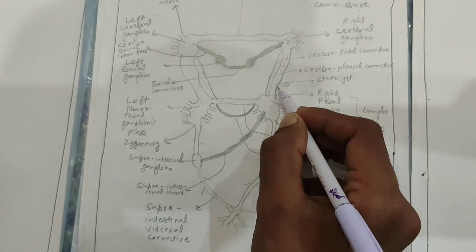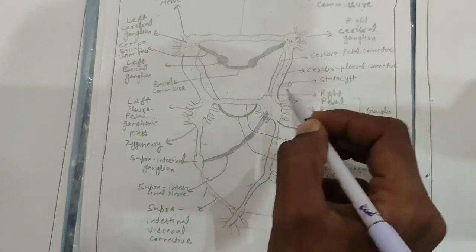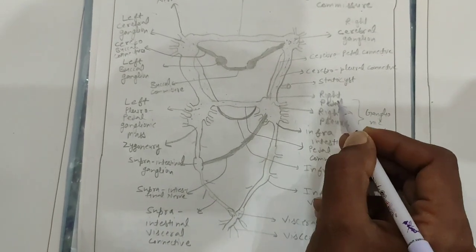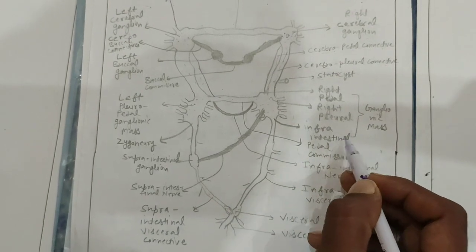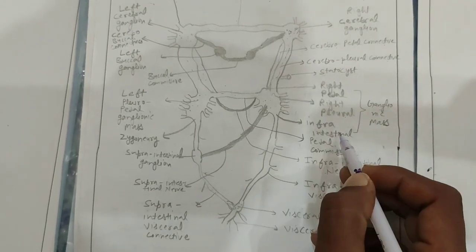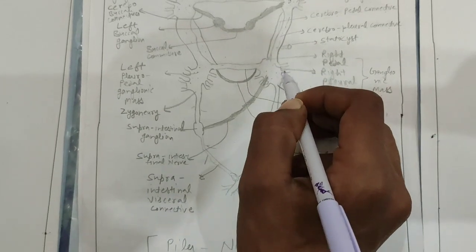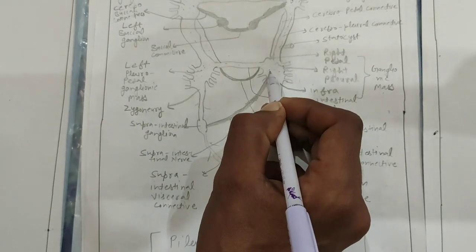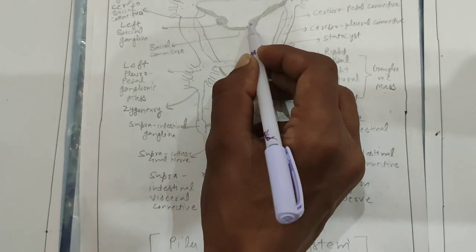On the surface of the pleural ganglia, some statocysts are present. Statocysts are sensory organs. Below the buccal ganglia, some ganglia are present: pedal ganglia, pleural ganglia, and infraintestinal ganglia. The infraintestinal ganglion is an unpaired ganglion, present singly. The right pedal ganglion, right pleural ganglion, and infraintestinal ganglion are collectively named the ganglionic mass. The two pedal ganglia — being the same type — are attached by pedal commissures.